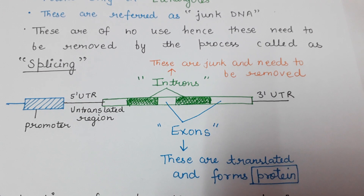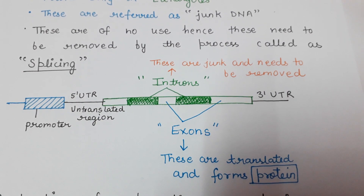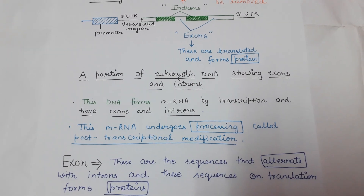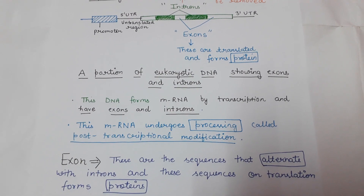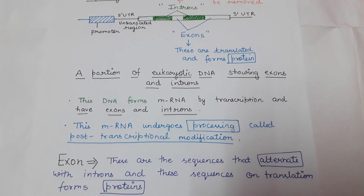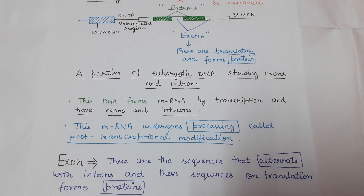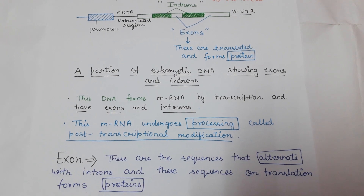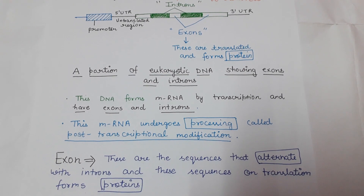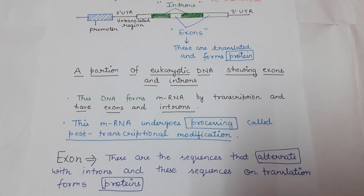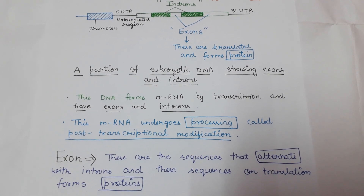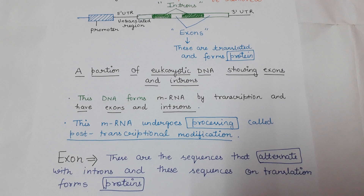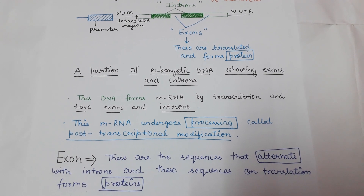Exons are translated and form protein. This DNA undergoes transcription and forms mRNA, which will also have the introns and exons. The mRNA then undergoes a process called splicing, or post-transcriptional modification, by which the introns get removed. Introns do not play any role in protein synthesis — only the exons do.